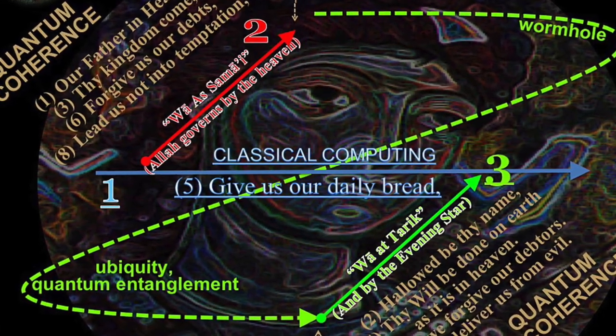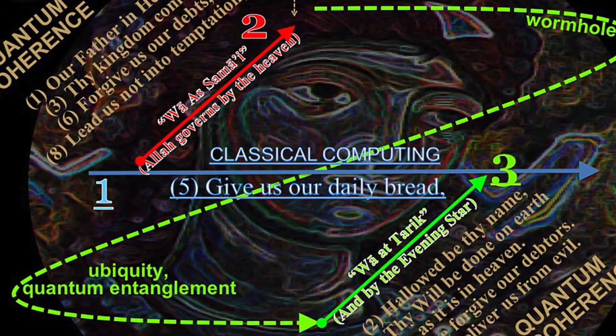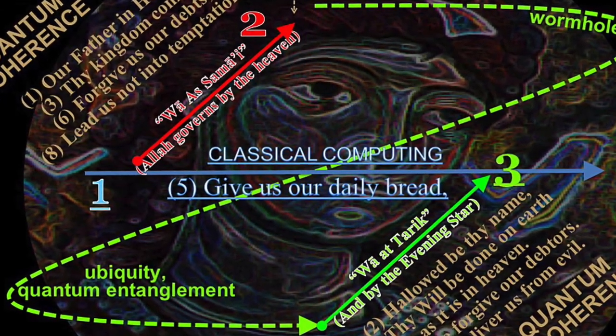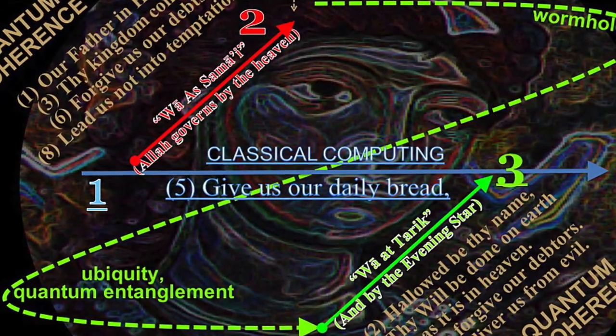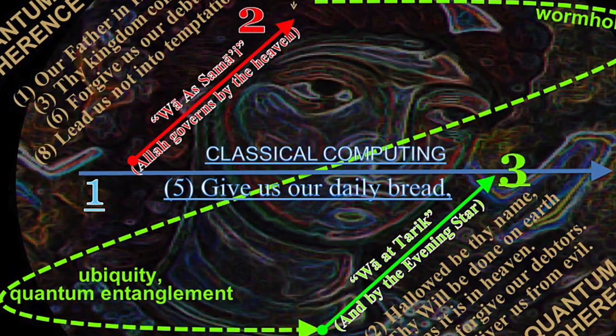Another example is given by the Quranic verses, which can be translated as Allah governs by the heaven or quantum coherence and by the star that shines first at night or quantum decoherence. Taken together, the bridge of coherence, the morning star between earth and heaven, and the bridge of decoherence may be seen metaphorically as a sea crossed by the ships of faster-than-light tachyons, a ramp, or as a hurricane.